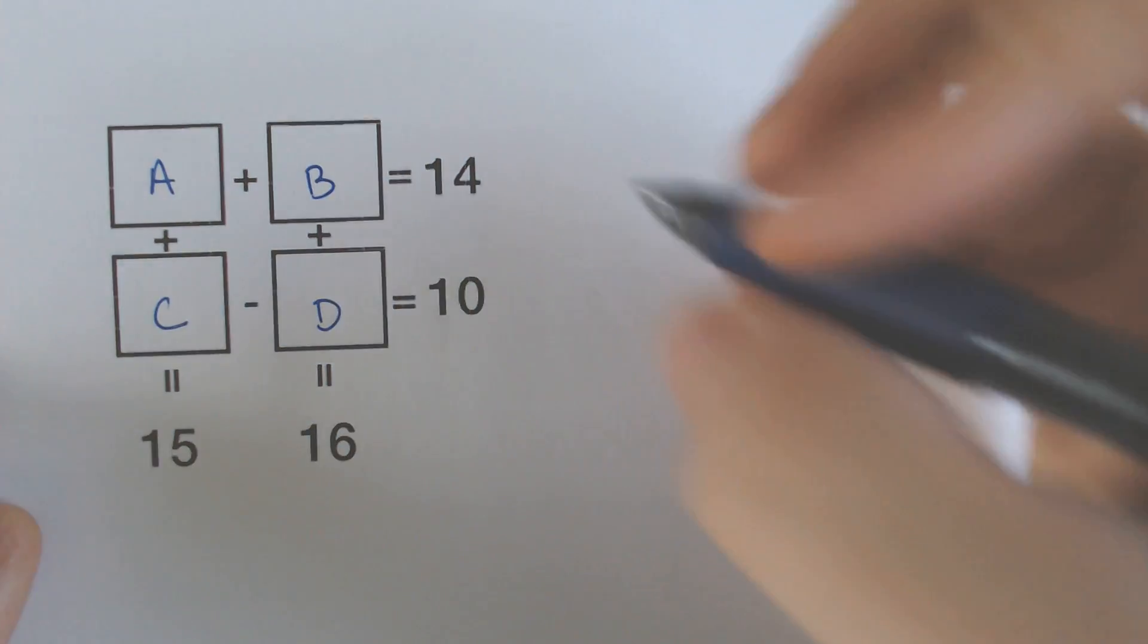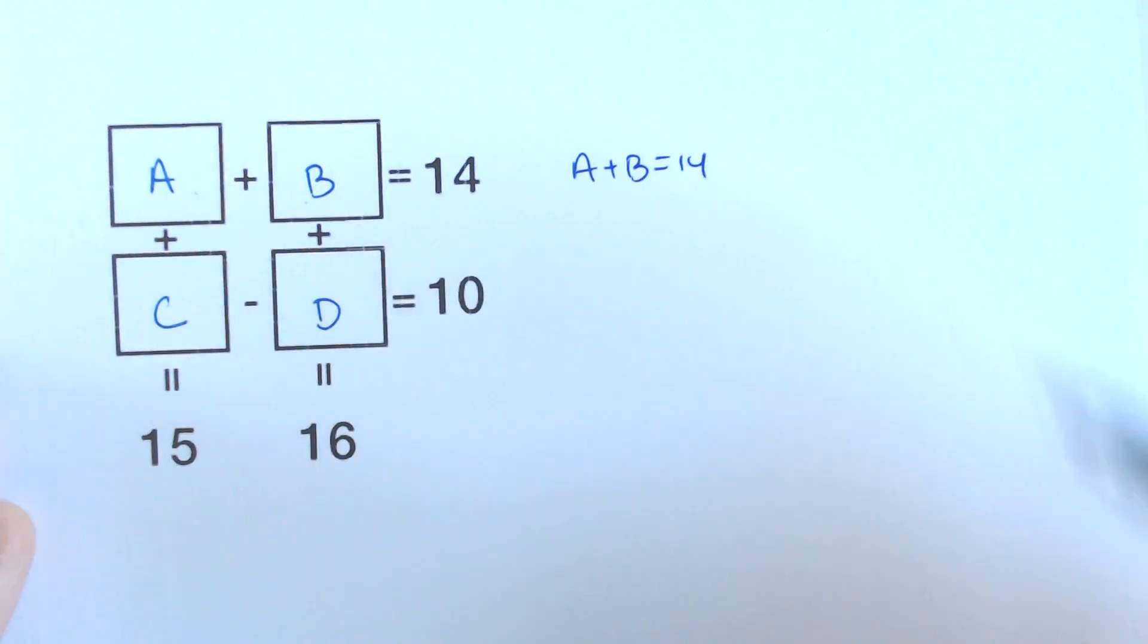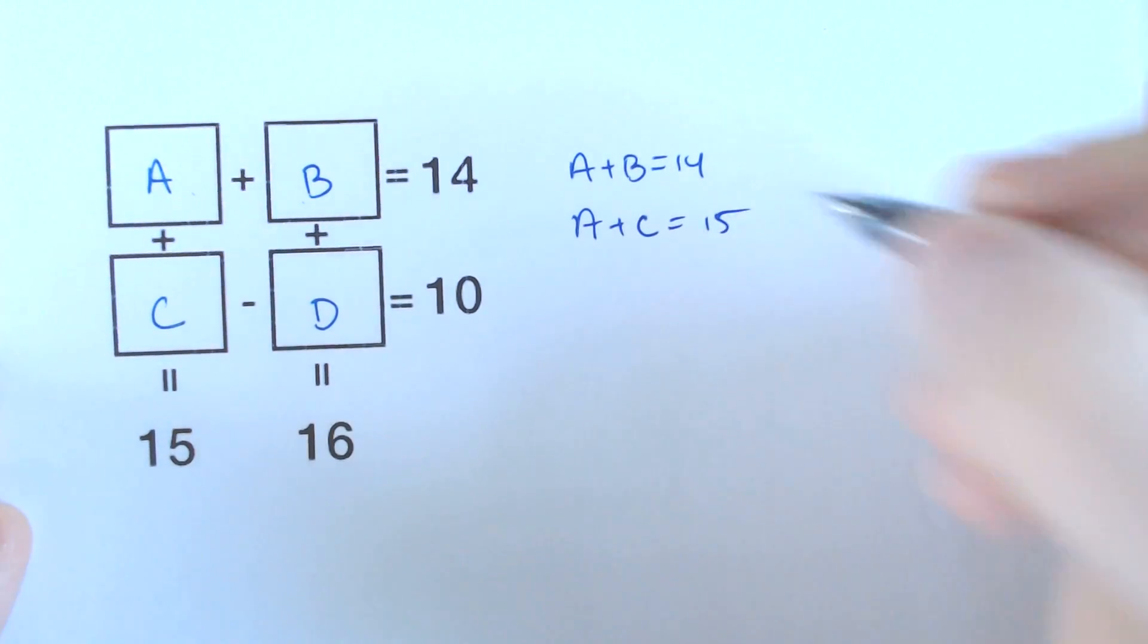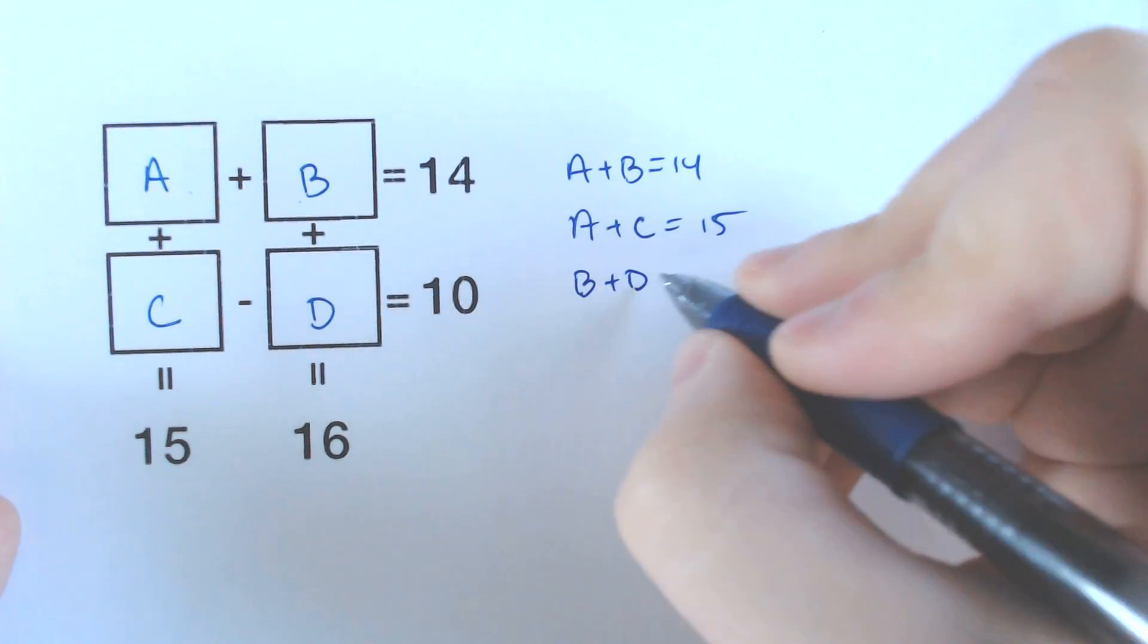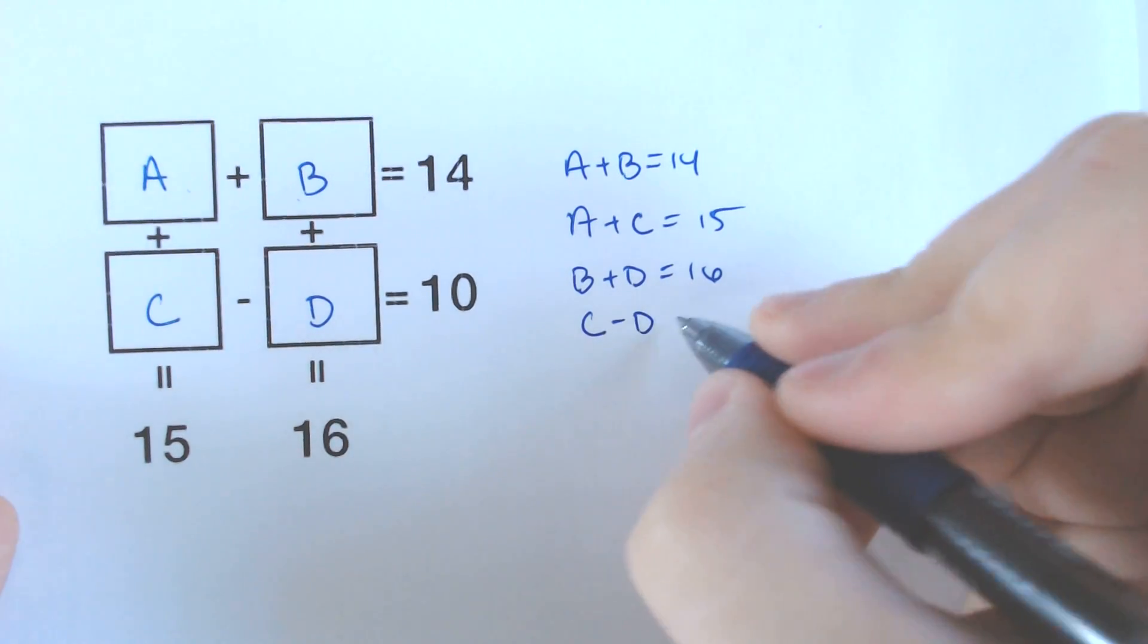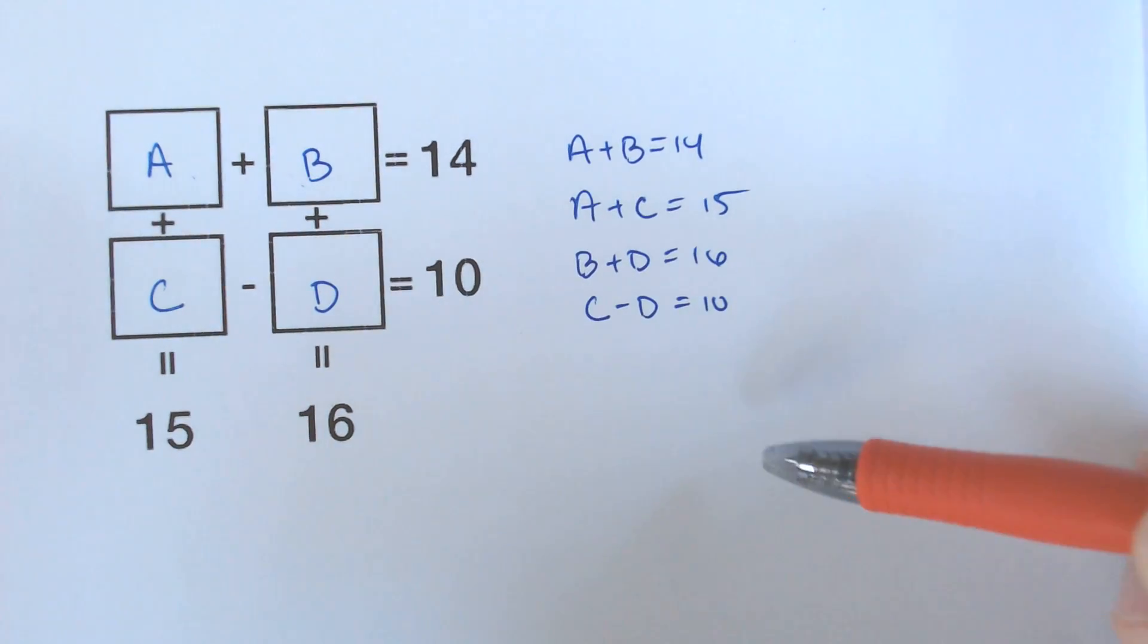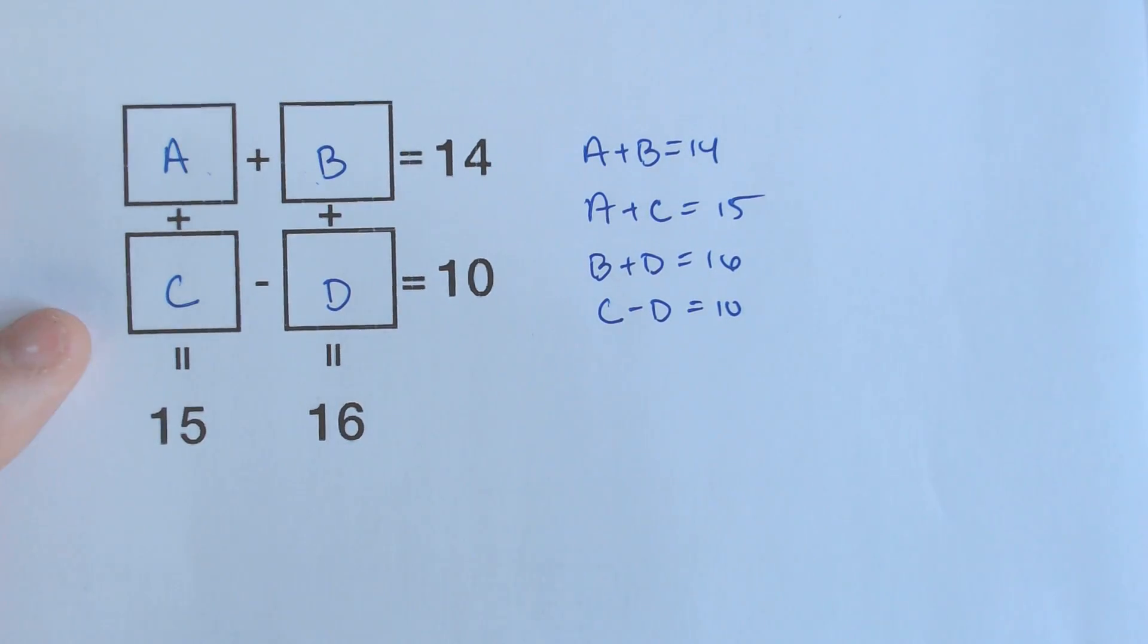And you could set up a system of equations where you could be like A plus B has to equal 14, and A plus C adding down has to equal 15, and B plus D adding down would have to equal 16. And then to the right, C minus D would have to equal 10. Now, if you've been in any algebra one class or algebra two class, you would be able to hopefully see that this is a system of equations. And in a system of equations, you have to have two of the same variable, which we don't have, but that doesn't mean that you can't use multiple systems to create something that is useful.